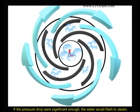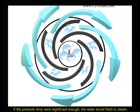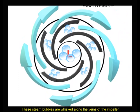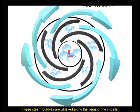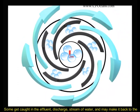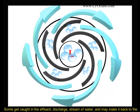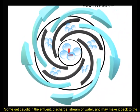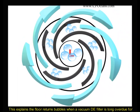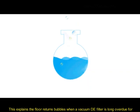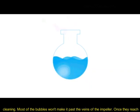If the pressure drop were significant enough, the water would flash to steam. These steam bubbles are whisked along the veins of the impeller. Some get caught in the effluent discharge stream of water and may make it back to the pool. This explains the floor return bubbles when a vacuum DE filter is long overdue for a cleaning.